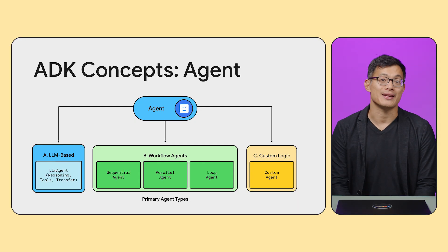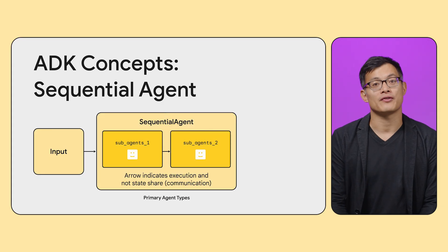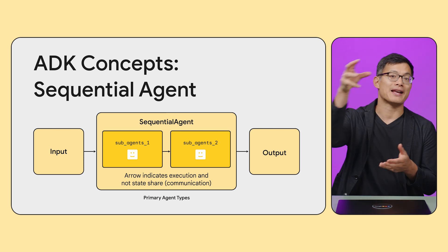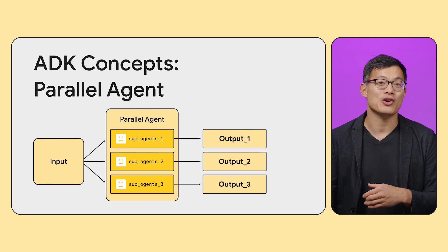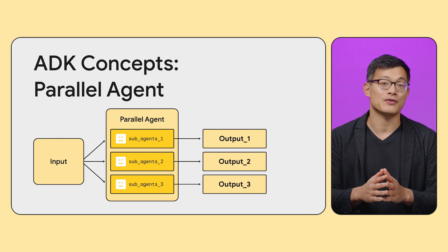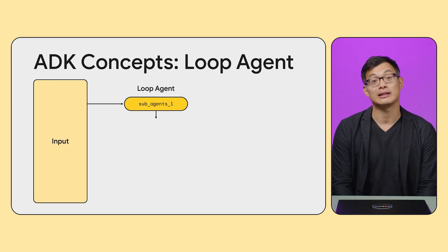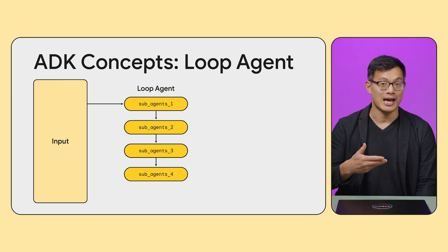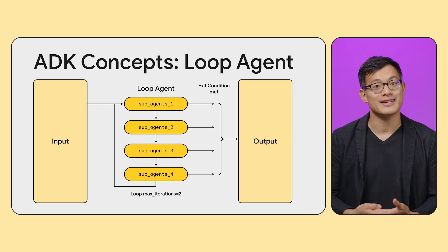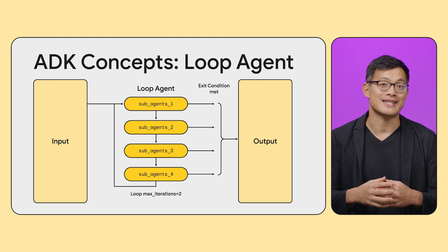For more prescriptive agent systems, ADK's workflow agents can orchestrate complex flows involving multiple agents. The sequential agent is simply a sequence of agents called one after another, with the outputs of each agent passed on to the next. The parallel agent allows concurrent execution of each sub-agent — for example, running multiple agents to find news for a given topic, with results collected and summarized by a downstream agent. The loop agent calls a chain of agents in sequence but may run this chain multiple times until an exit condition is met — for example, a story writing system that iteratively adds details until a critique agent is satisfied with the final output.